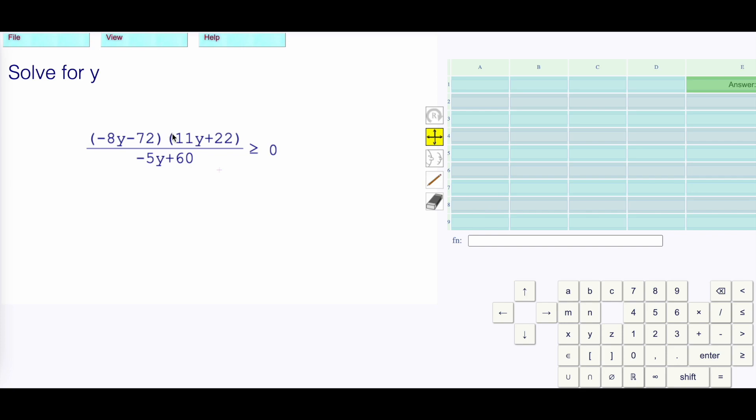Set the top equal to 0. This bracket times that bracket is 0. I'm going to set each of these brackets to being 0. I have -8y-72 equals 0. Add 72 to both sides, so -8y equals 72. Then divide both sides by -8, y is equal to -9.